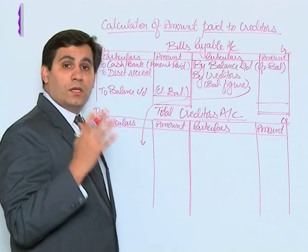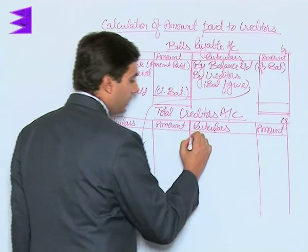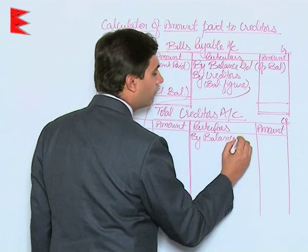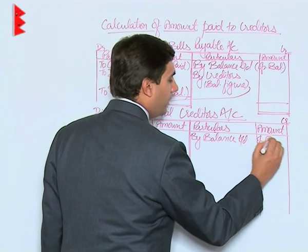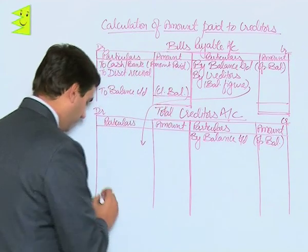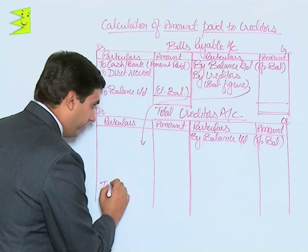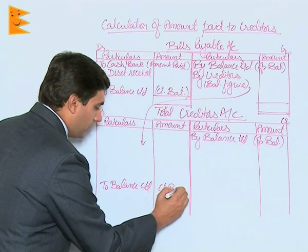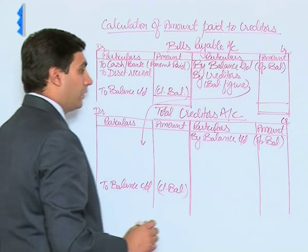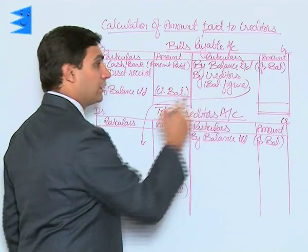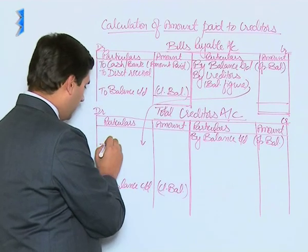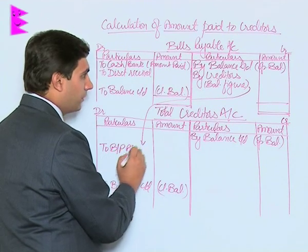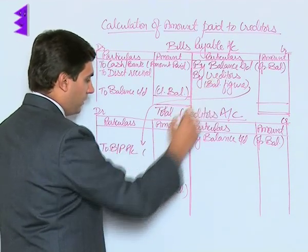Remember, this balancing figure would then be transferred to the creditors account. Coming to the creditors account — since it is a liability it will have a credit balance, shown as 'by balance brought down' for the opening balance and 'to balance carried down' for the closing balance. The entry that appeared on the credit side of bills payable is transferred to the debit side of creditors account as 'to bills payable account.'